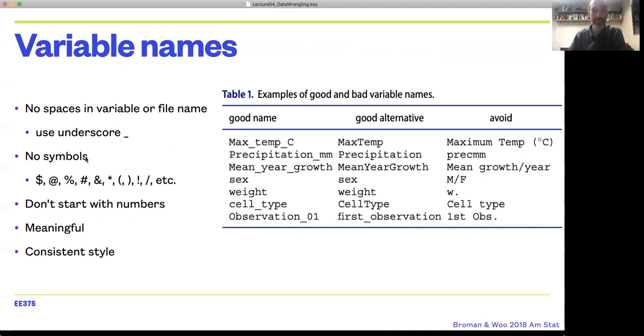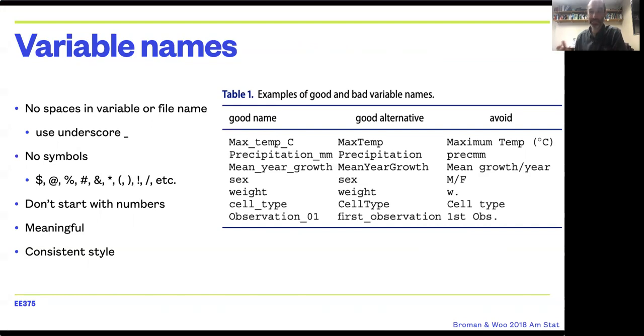Also try to avoid using symbols within variable names because they might be interpreted by a software language as actual syntax. I also recommend against using numbers at the start of variable names because a number of languages don't like that in variable naming. R will tend to change columns numbered like 1, 2, 3, 4, 5 to X1, X2, X3, X4, X5.